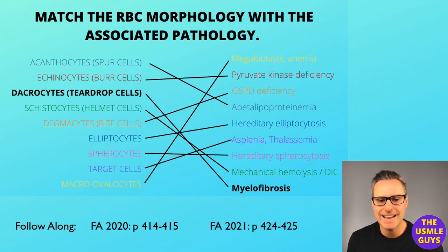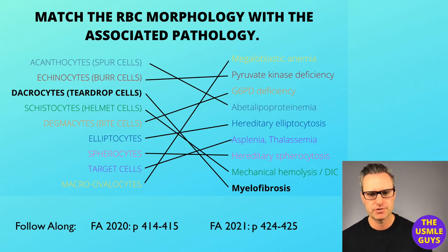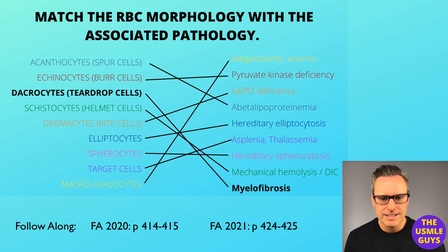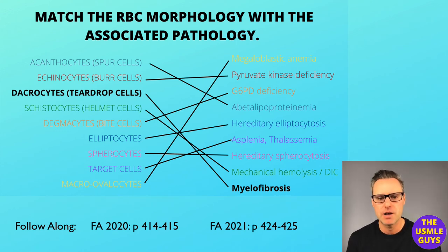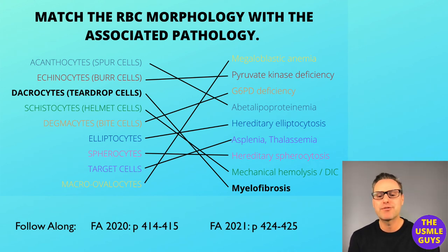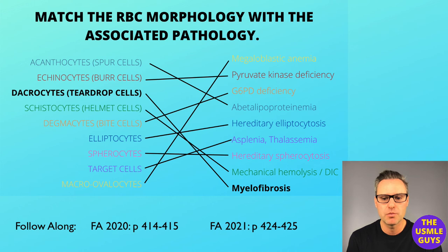If you put the acanthocyte side-by-side with the echinocyte, you'll notice it's smaller but has uniform projections. Next is the dacrocyte, or teardrop cell — these are the consequence of bone marrow infiltration. When the bone marrow gets infiltrated, red blood cells are squeezed out into a teardrop shape. Next, we have schistocytes, also known as helmet cells — these are fragmented red blood cells due to mechanical hemolysis, such as with a prosthetic heart valve, or in microangiopathic hemolytic anemias like DIC, TTP-HUS, or HELLP syndrome.